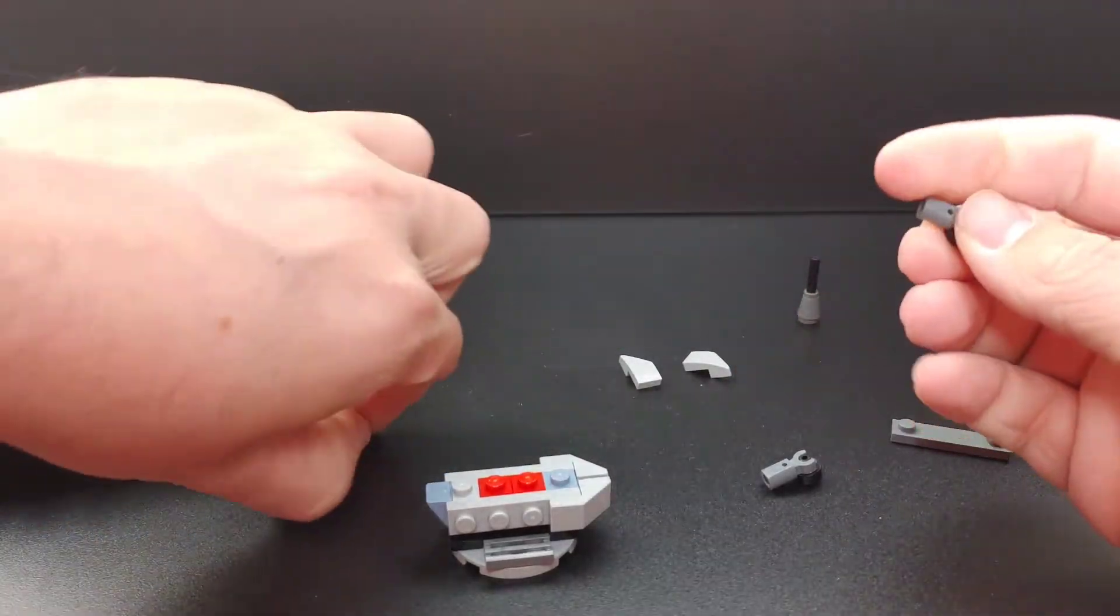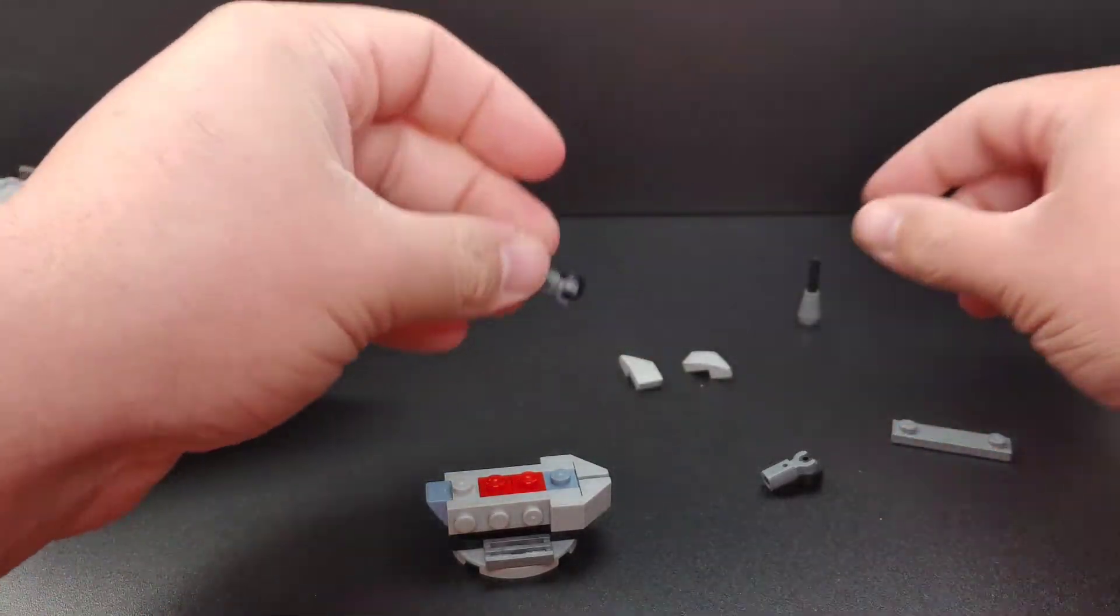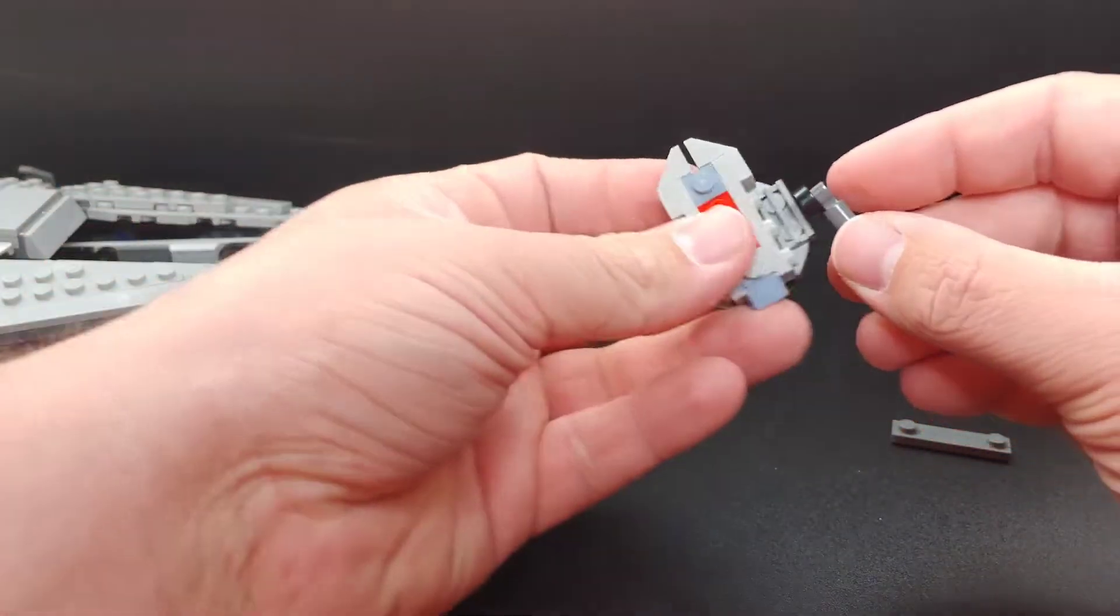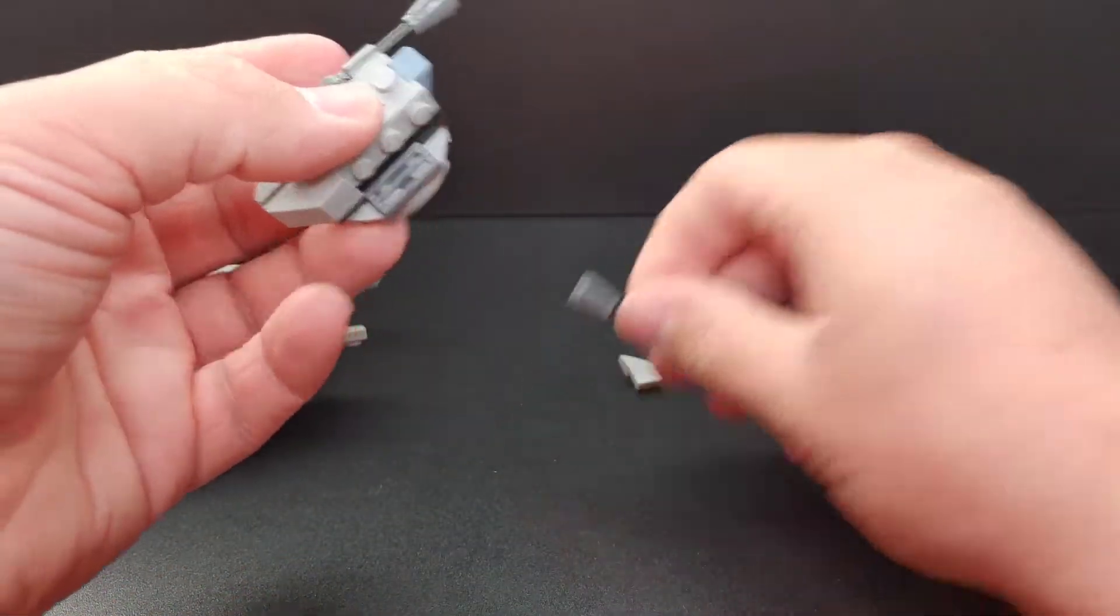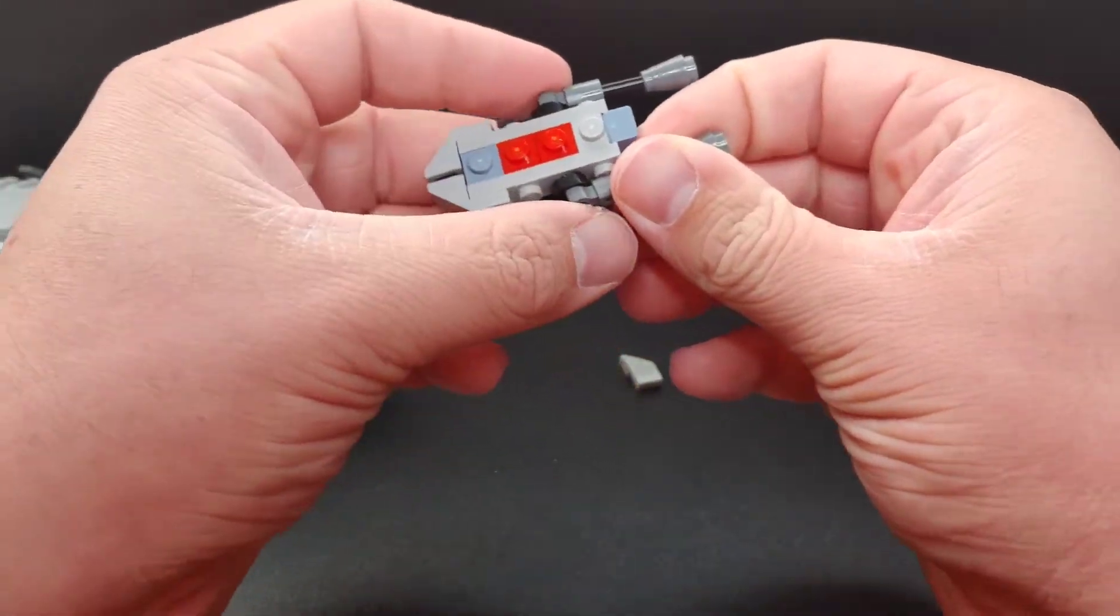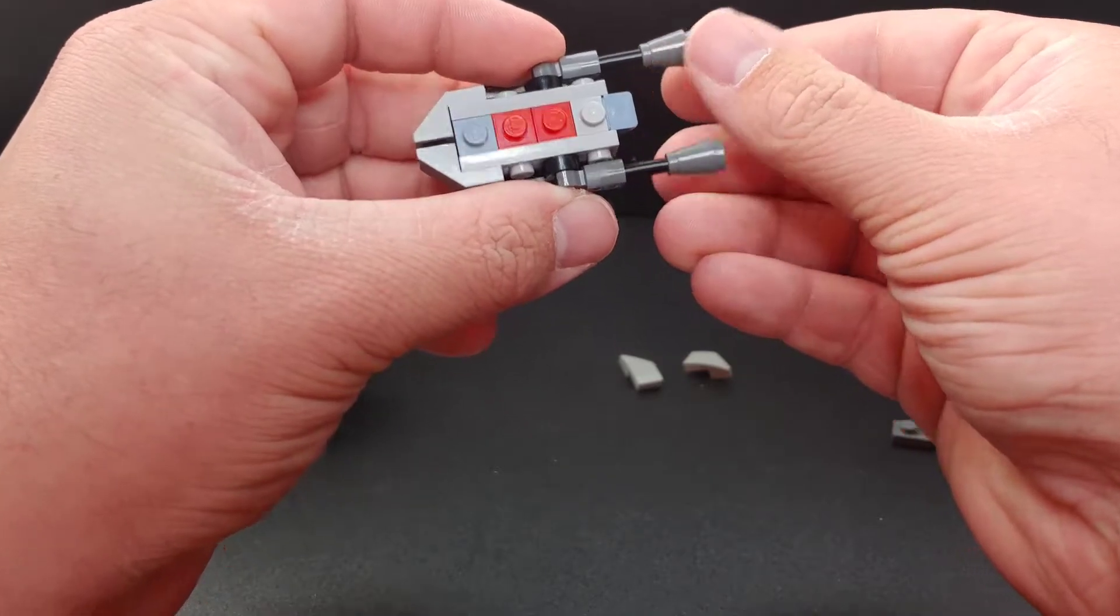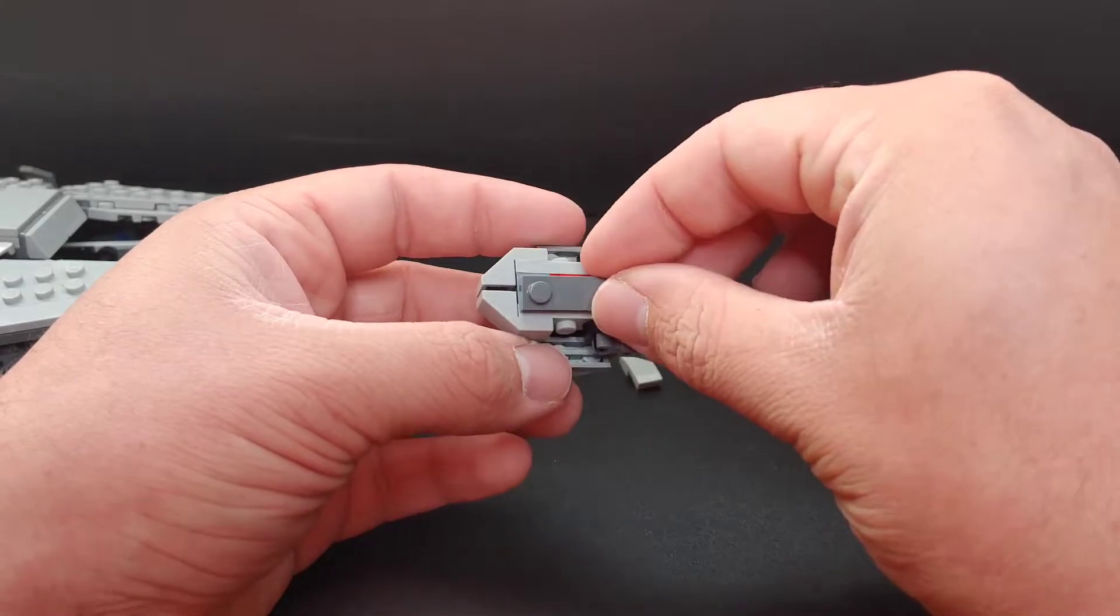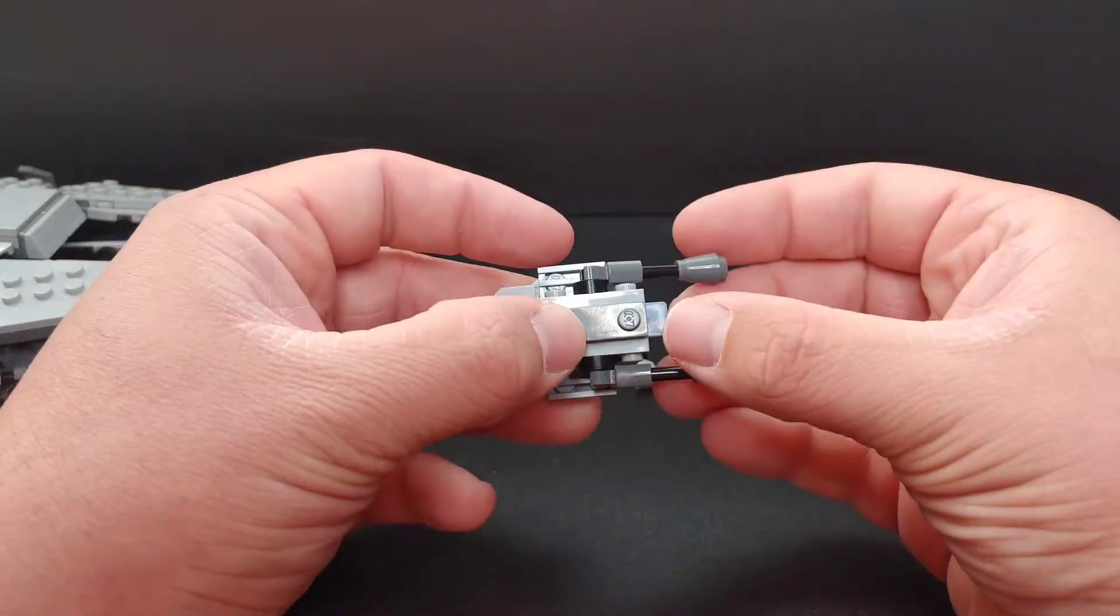We'll take the black nipple pieces, throw them on, throw the cannon parts in. Those will go too deep, just like that. Pretty simple, nothing crazy.